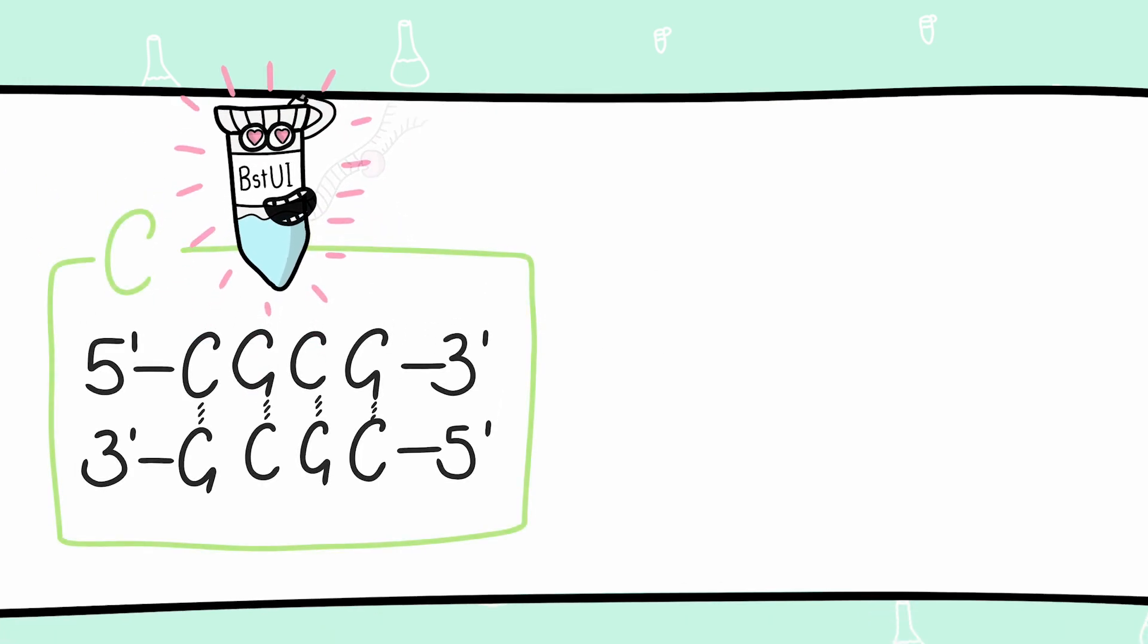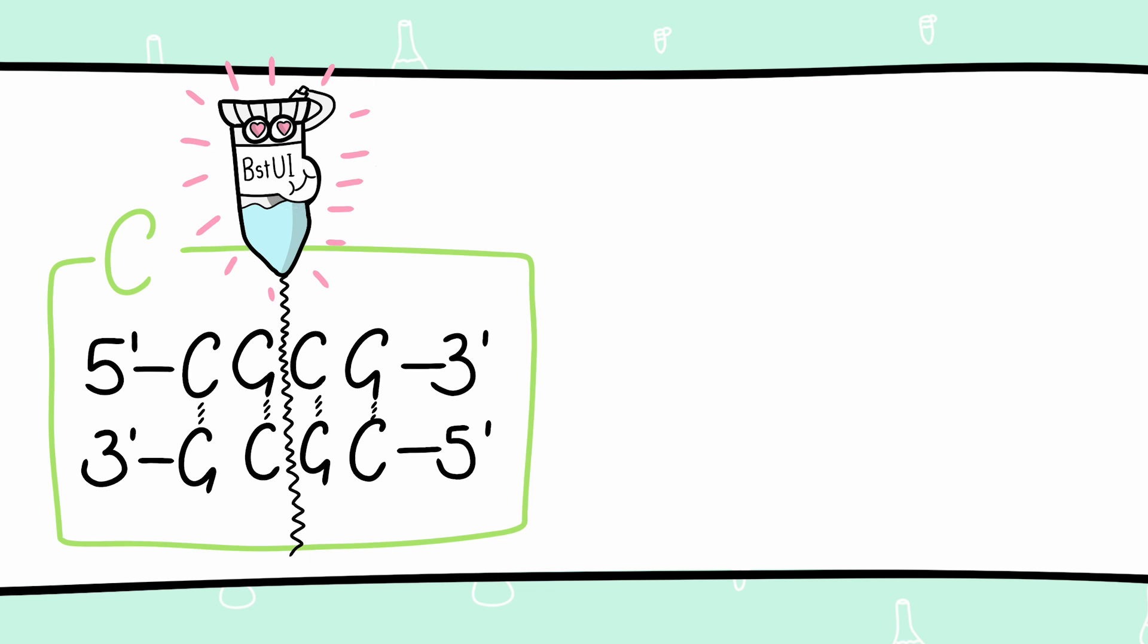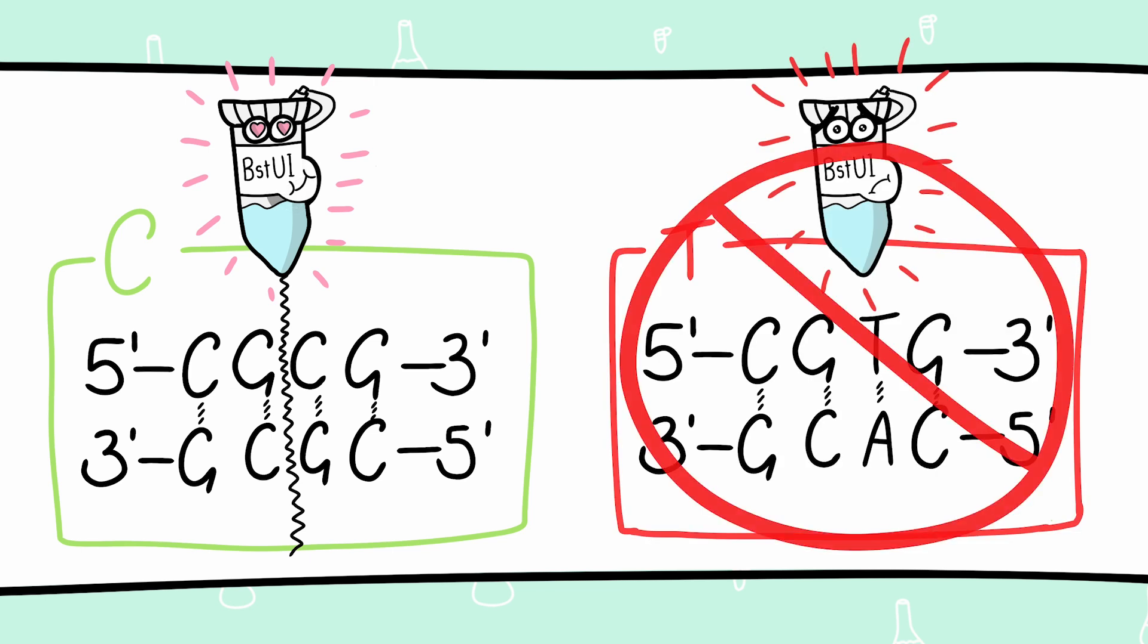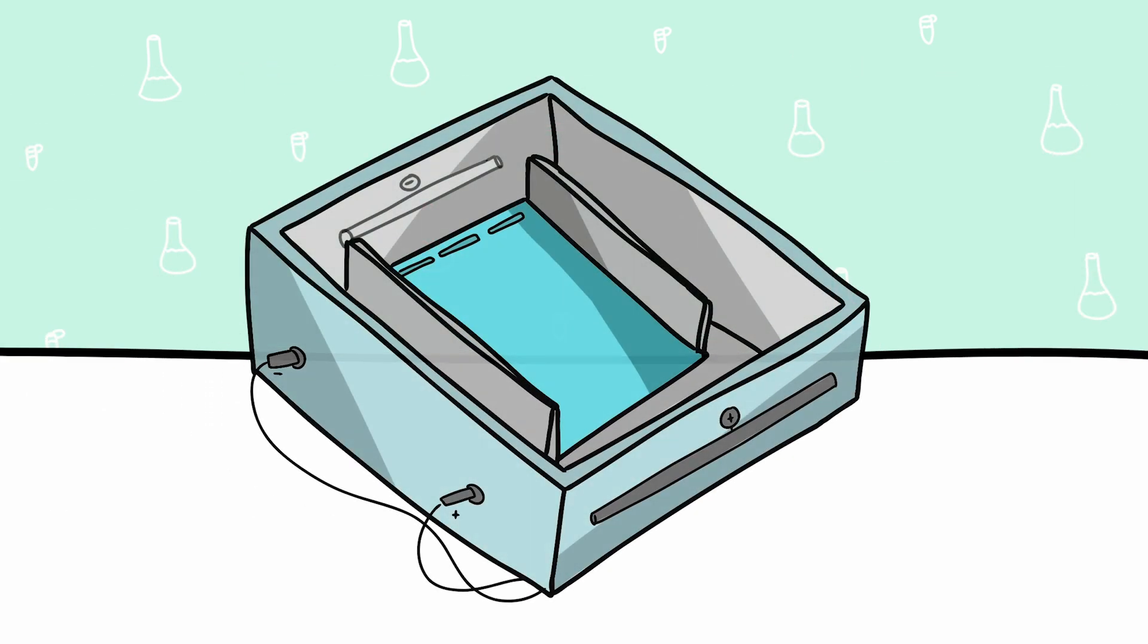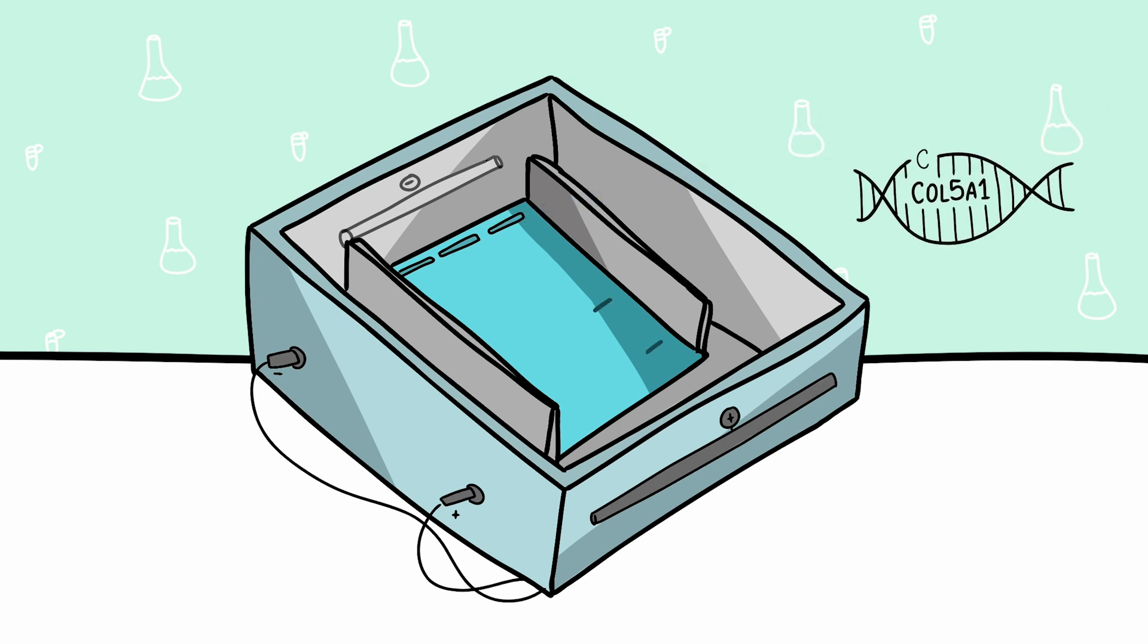The sequences containing a C had successful cleavage, making two fragments, whilst the T-allele sequence did not have any digestion. Following this, gel electrophoresis was conducted. Digested wild-type fragments had considerable movement towards a positive electrode, as they were of lower weight. The undigested fragment thus remained close to the negative electrode. This spatial separation made genotyping possible for all subjects involved.